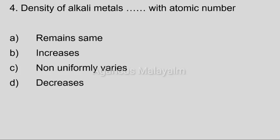Fourth question: Density of alkali metals does what with atomic number? Answer options: Option A, remain same. Option B, increases. Option C, non-uniformly varies. Option D, decreases. Correct answer: Option D, decreases.